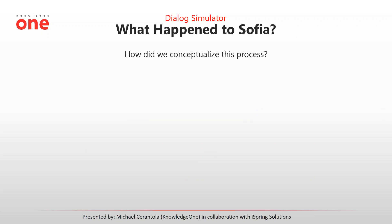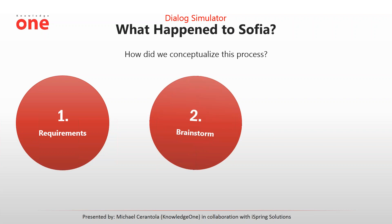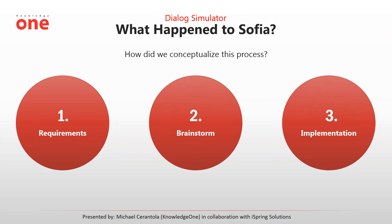The main ingredients we used to create this branching scenario are essentially PowerPoint, a license of iSpring Suite, a script for the scenario, an image database, and for advanced animations, Adobe Illustrator from the Creative Suite. How did we conceptualize this process? Once we received the requirements, we got everyone in a room for a brainstorm, bounced ideas off each other, and came up with our plan of action. It is a very heavy course with sensitive and opinionated subject matter. The goal of the branching scenarios was to increase awareness about making moral decisions — stopping to put your own opinions aside and assess the other party's needs when making a critical decision.